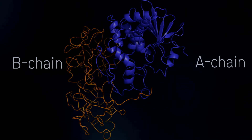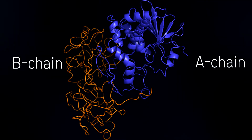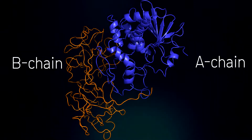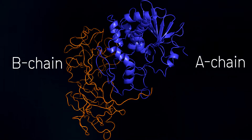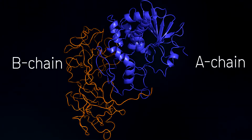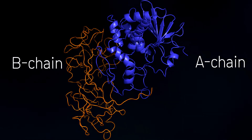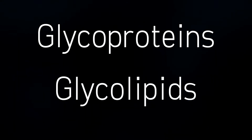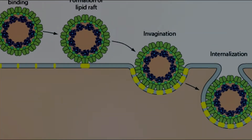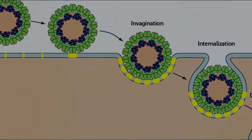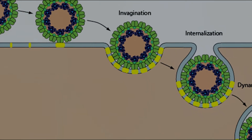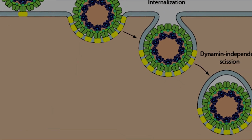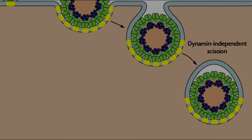The B-chain, on the other hand, helps to transport RIPs into the cell. They do this by binding to specific sugar residues on the plasma membrane — two examples would be glycoproteins or glycolipids. After receptor binding, such proteins are internalized by endocytosis, a process used to bring substances within cells.